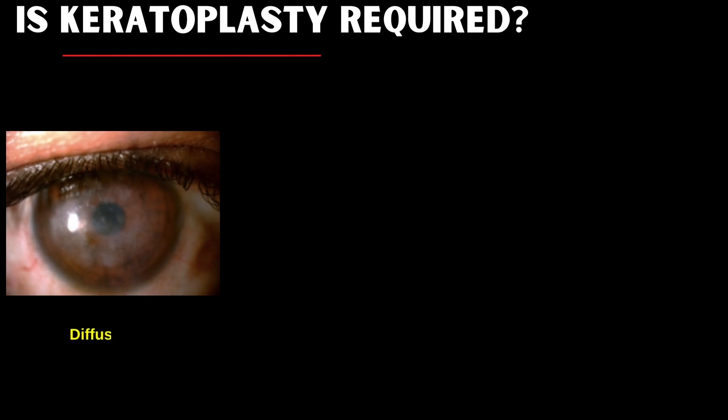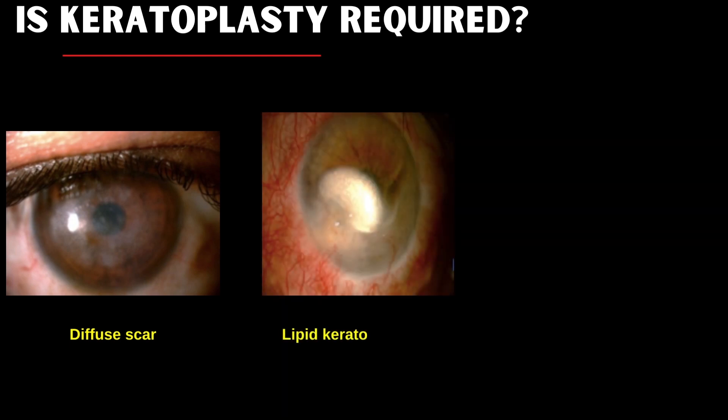This shows a diffuse nebulomacular scar, but the architecture of the iris and pupil can still be seen clearly, implying that the patient can also see through that cornea but with a lot of distortion and glare. In this case, the use of a contact lens would be helpful, and many of these patients can be fitted with scleral lenses. We know that keratitis invites vascularization, and vascularization in which lipid keratopathy is seen here. This can be treated with fine needle diathermy, about which we will speak later.